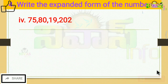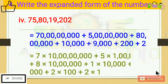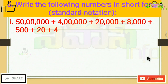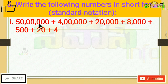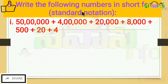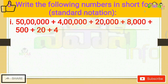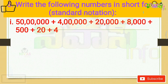That is the fourth problem — expanded form. Next, the fifth question: write the following numbers in short form. Short form is the reverse of expanded form — you combine the expanded values back into a single number.